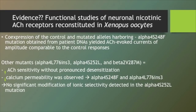Functional studies of neuronal nicotinic ACh receptors reconstituted in oocytes were designed to analyse the common traits displayed by the different mutations associated with ADNFLE. Co-expression of wild-type and mutated subunits harbouring the alpha 4 S244F mutation obtained from patients' DNA yielded ACh-evoked currents of amplitude comparable to control responses, but with higher sensitivity and desensitization to the natural agonist. Other mutants displayed increased ACh sensitivity without pronounced desensitization. Where a reduction of calcium permeability was observed for some mutants, no significant modification of ionic selectivity could be detected in the alpha 4 S252L mutation. Hence, increased acetylcholine sensitivity is the only common characteristic so far across the mutant receptors investigated.